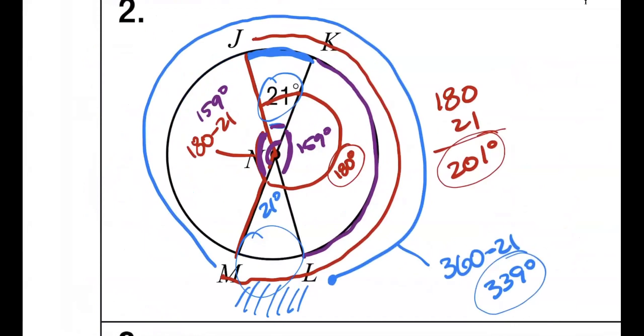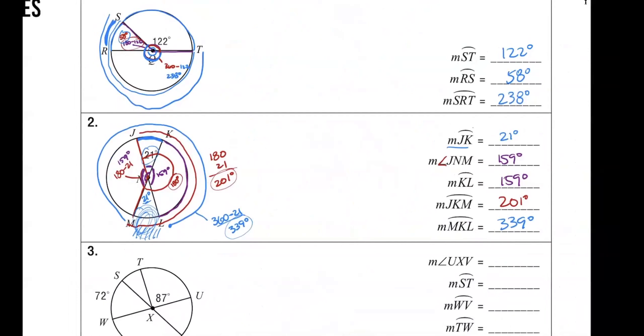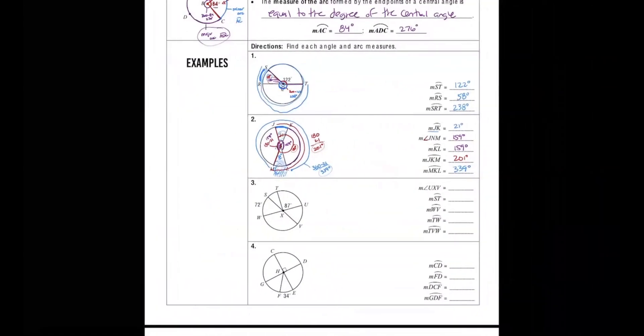So, MKL is all the way around, except for that little piece, the little piece right here, which is 21 degrees. So, it's the entire 360 minus 21, which is why we got 339. Sorry about that. Technical difficulties, right? Just like in class. So, that's pretty much the lesson, guys. If you know the angle, and you can figure out what the angle is, you know what the arc is.